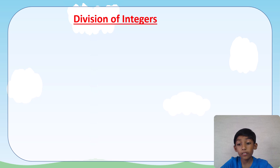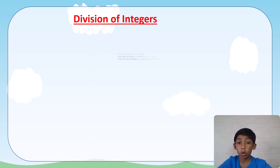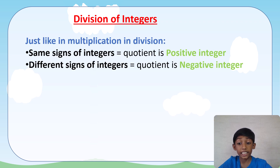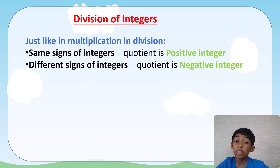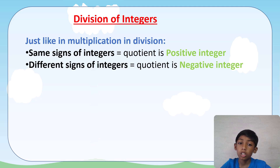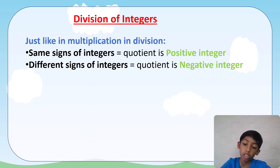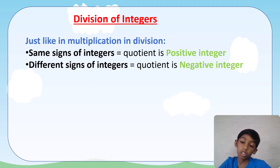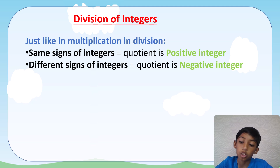Now we are going to learn the division of integers. The rules in multiplication are common in division also. If you divide a positive integer by a positive integer, the quotient is a positive integer.